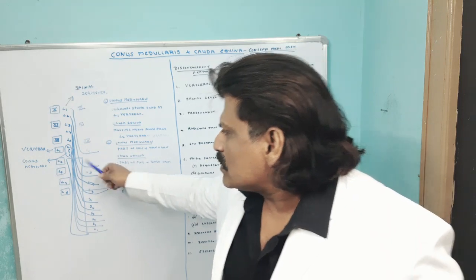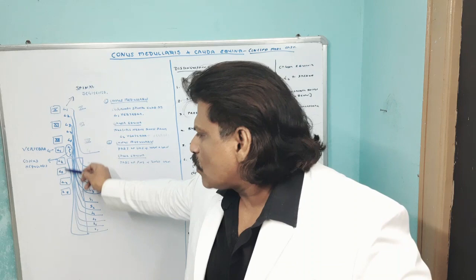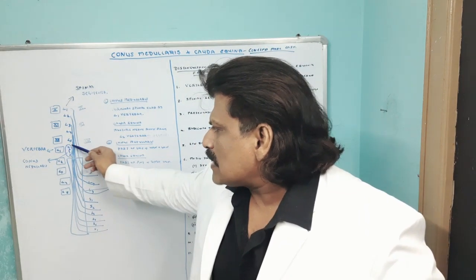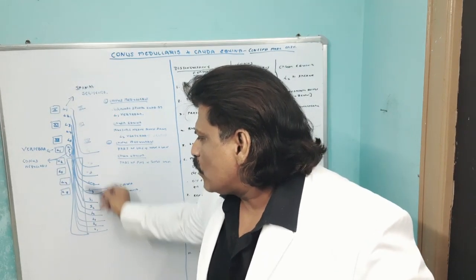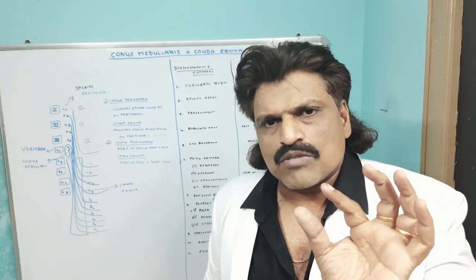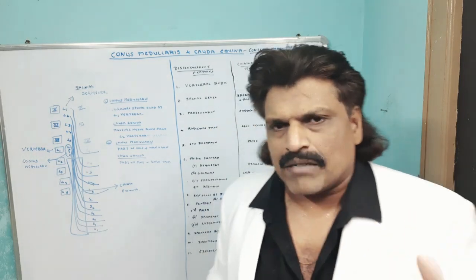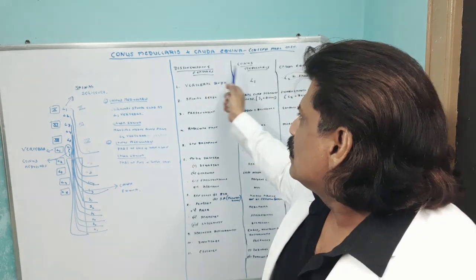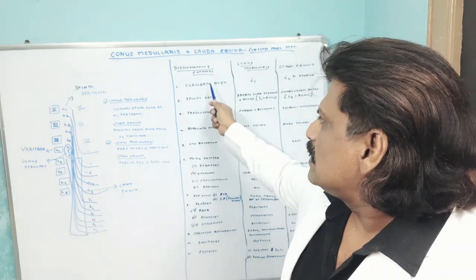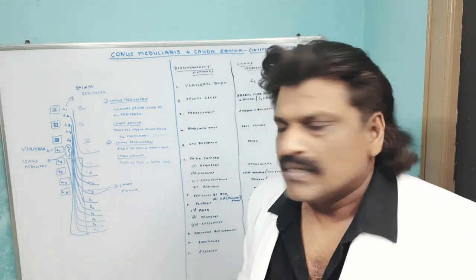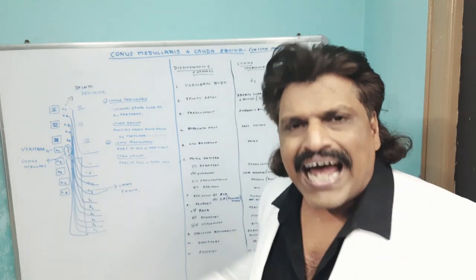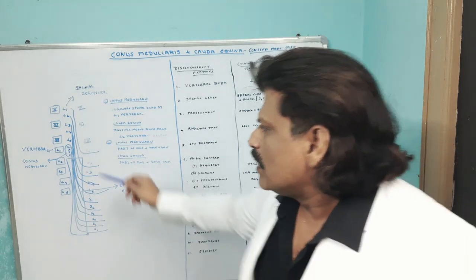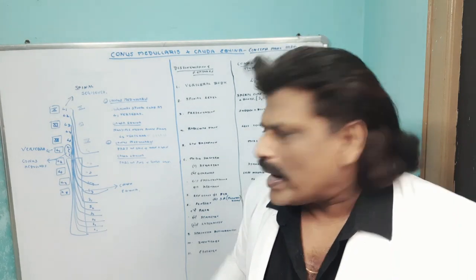Conus medullaris is at the level of L1 — the tip of the spinal cord. Cauda equina is at the level of L2 vertebral body and below. L1 vertebral body corresponds to conus medullaris, L2 vertebral body and below corresponds to cauda equina. When it comes to distinguishing features: conus medullaris contains the sacral and coccygeal segments, S1 and below. Cauda equina contains the lumbosacral segments, L2 and below as nerve roots.